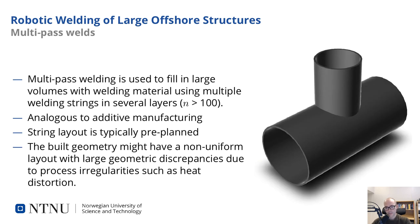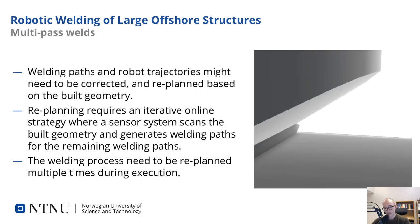Another aspect is that of large welding seams, where multiple passes analogous to additive manufacturing have to be performed to fill the entire volume. The welding string layout is typically pre-planned. However, the built geometry might have a non-uniform layout with large geometric discrepancies due to process irregularities such as heat distortion. In addition, welding paths and robot trajectories might need to be corrected and re-planned based on the built geometry. This re-planning requires an iterative online strategy, where a sensor system scans the built geometry and generates welding paths for the remaining welds. The welding process might need to be re-planned multiple times during execution.